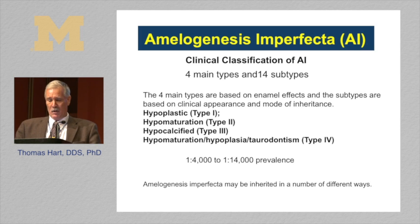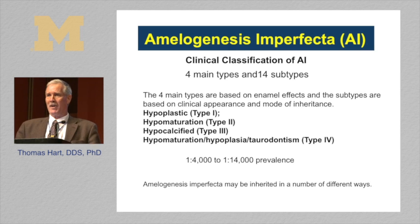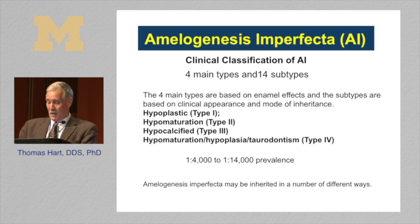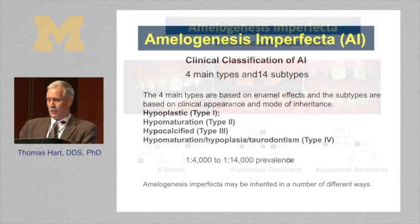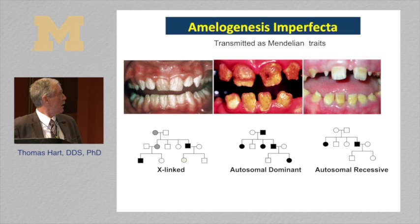The problem is that clinical diseases were identified and described long before we had the ability to identify the etiologic underpinnings, so they're imprecise. What's developing now is incorporating genetics to develop better nosologies. The prevalence of AI varies dramatically in different parts of the world, and it can be inherited in a number of ways: X-linked, autosomal dominant, or autosomal recessive Mendelian patterns of inheritance.